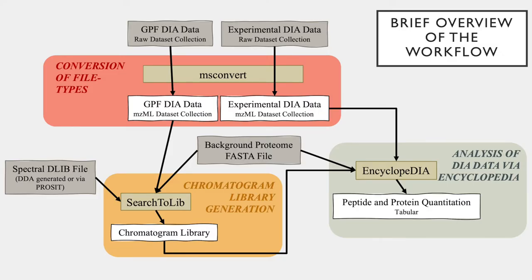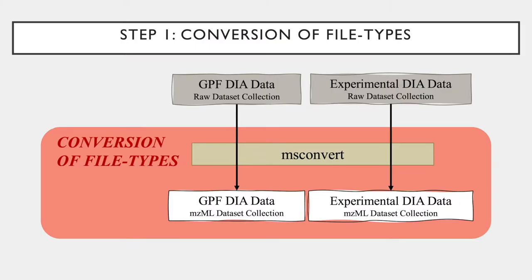Here is an image of the Encyclopedia workflow. I will briefly explain the three different steps of the workflow now before we run it as part of the tutorial. The first step is the conversion of files using msconvert. As the experimental dataset and the GPF dataset are both in a .raw format in this tutorial, they must be converted to a .mzml file type, which is the appropriate input type for the Search2LIB and Encyclopedia Quantify tools.